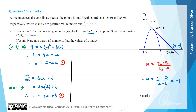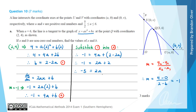We solve the two equations simultaneously. Substituting equation 1 (b = 2 − 2a) into equation 2 gives −1 = 4a + (2 − 2a), which simplifies to −1 = 2a + 2. Subtracting 2 from both sides gives −3 = 2a, so a = −3/2.